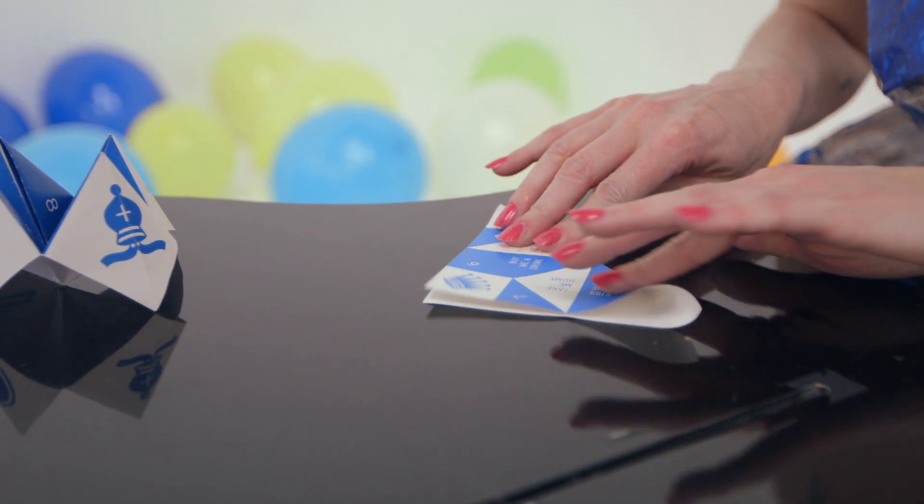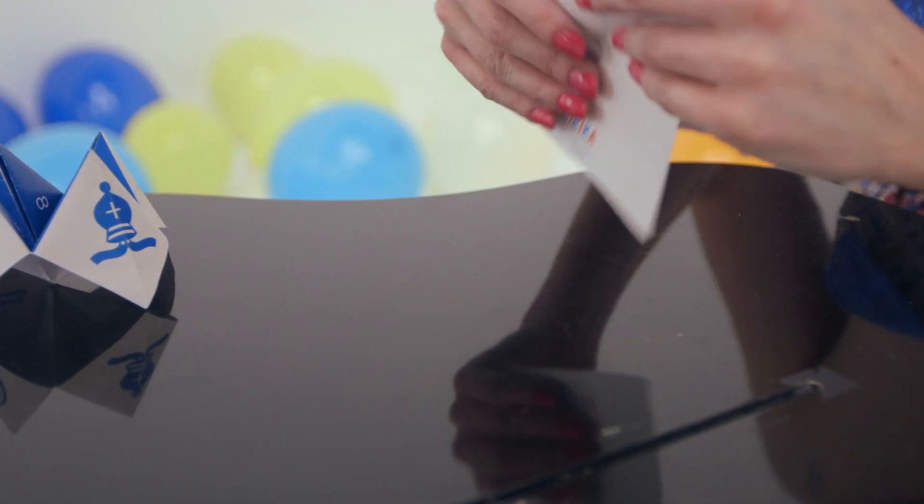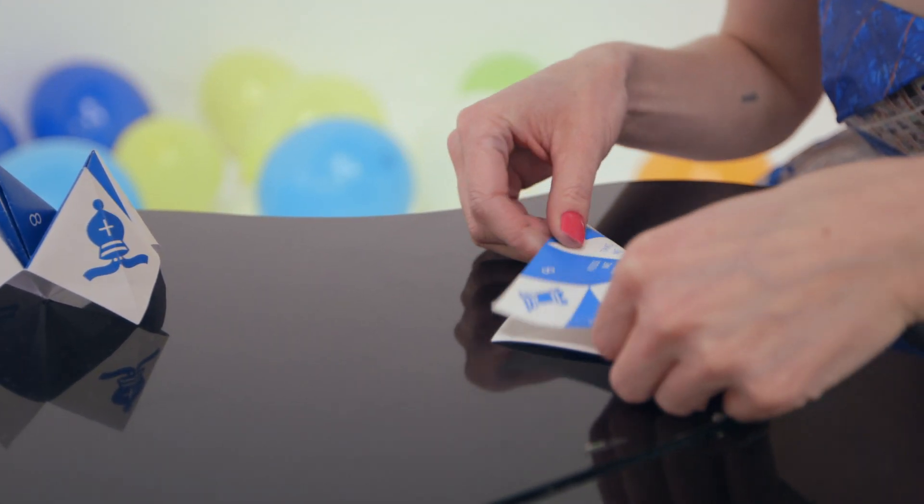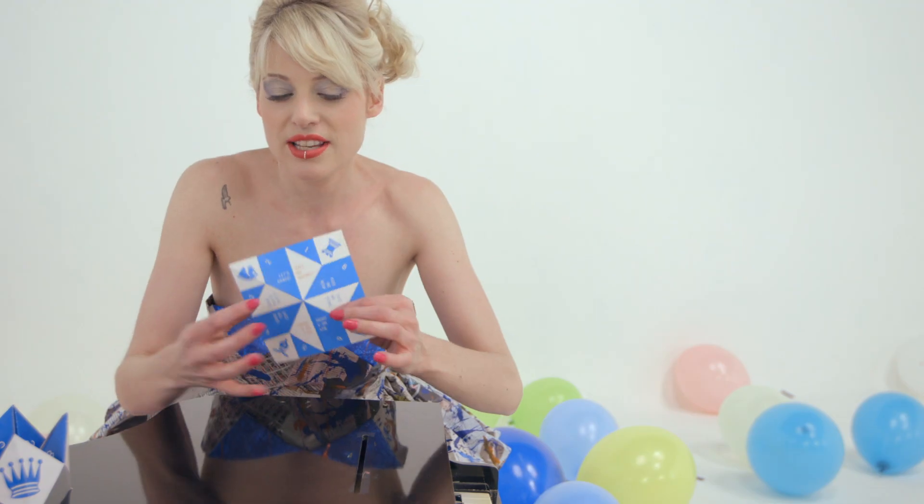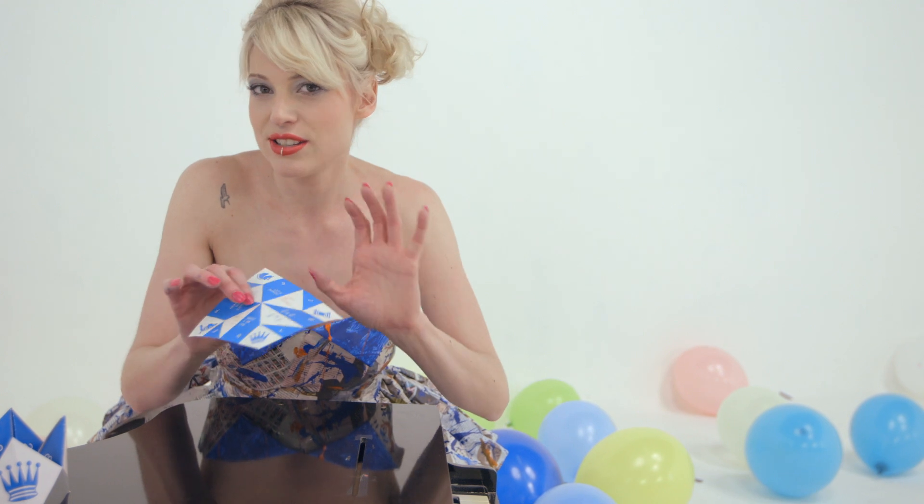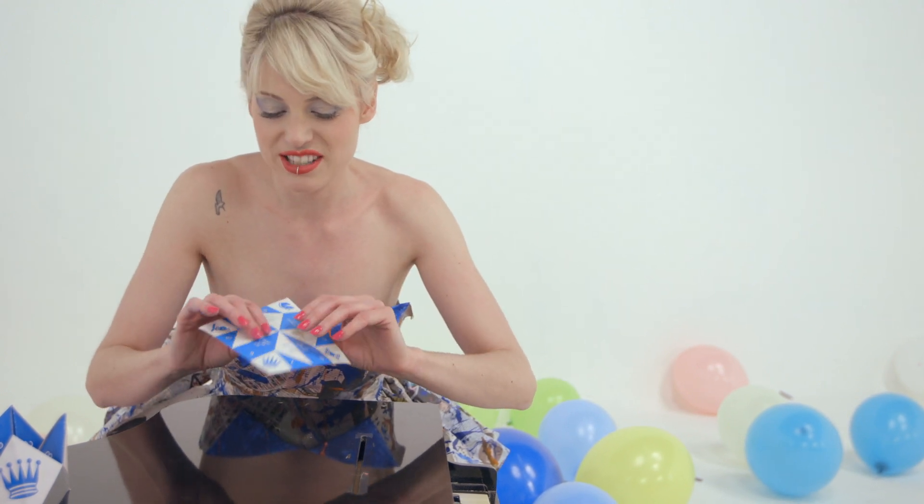Alright, so the first thing you want to do is fold it like it's a big triangle. So what we've got here, we've got two folds, one on either side. This is all made up for you so all you have to really do is follow the lines.